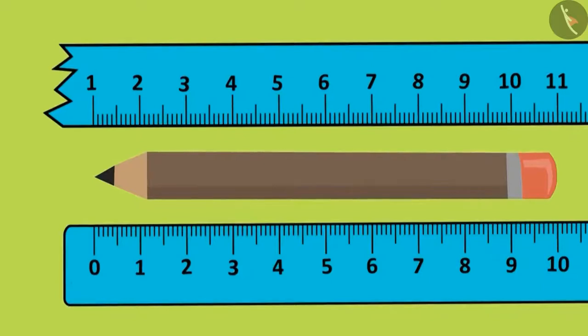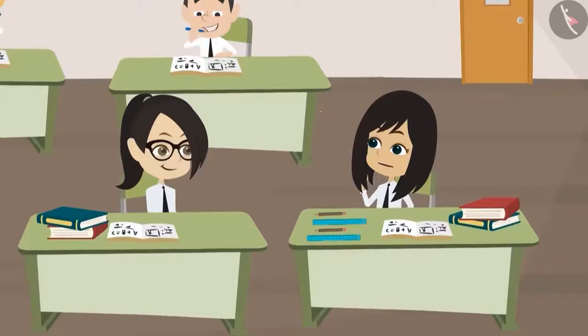Look! The correct scale has a 0 written at the starting point. While measuring with the broken scale, we are starting from 1. This means whenever we measure using a broken scale, we will still start from 0. Yes!